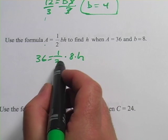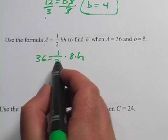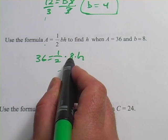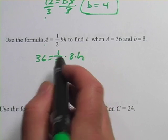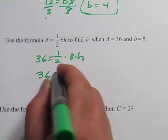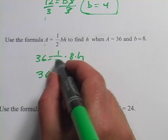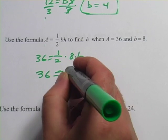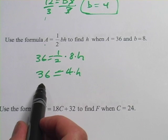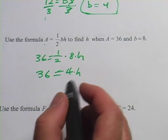I think the first thing I'm going to do here is a little bit of simplification. I know that one-half times 8, or 8 divided by 2, is 4. So I could simplify this just by combining the one-half and the 8 together to be 4 times h. So 36 equals 4 times h.